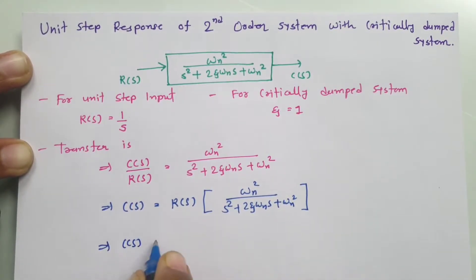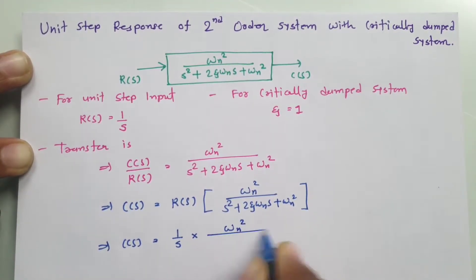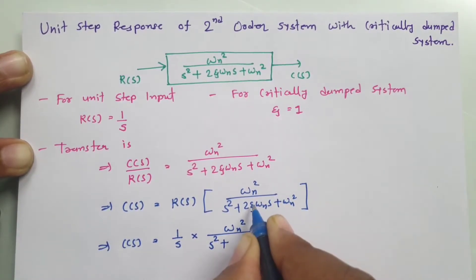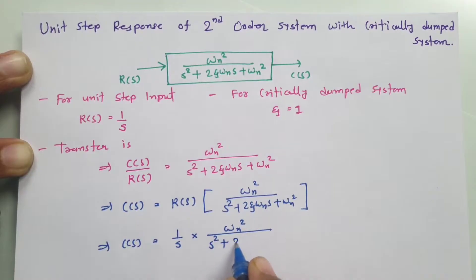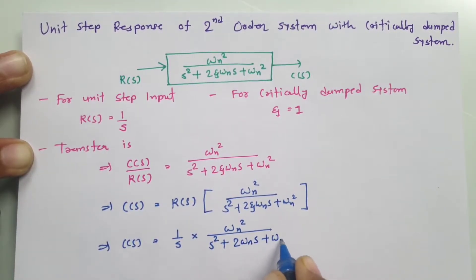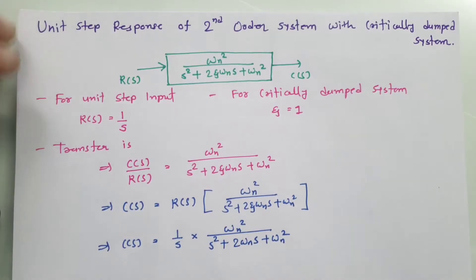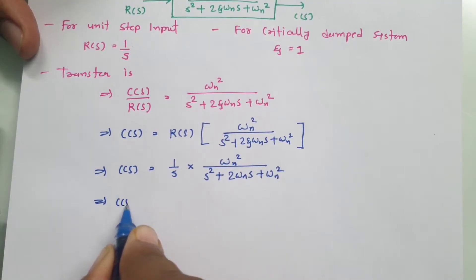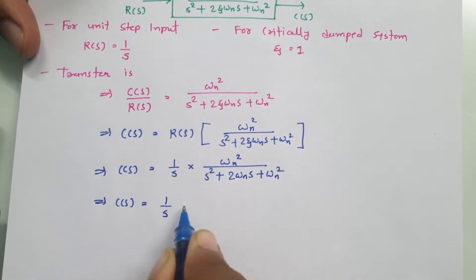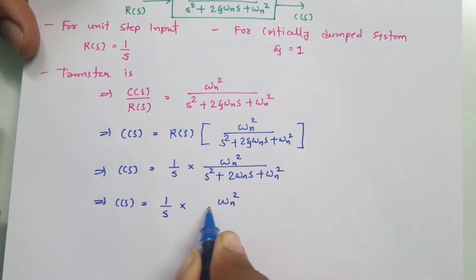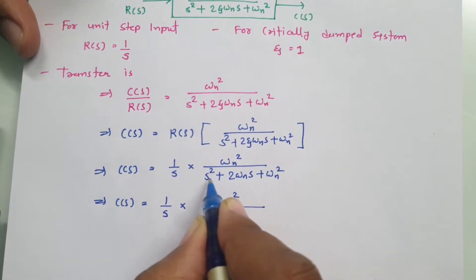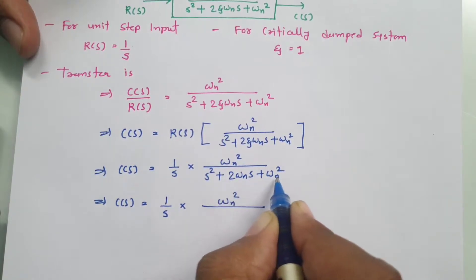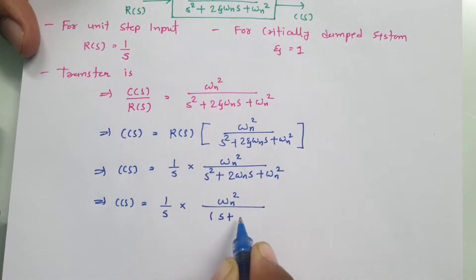C(S) equals 1 over S multiplied by omega_n squared divided by S squared plus 2 omega_n S plus omega_n squared. We can simplify the denominator: S squared plus 2 omega_n S plus omega_n squared factors as (S plus omega_n) squared.